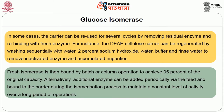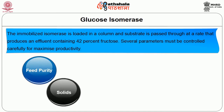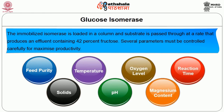Fresh isomerase is then bound by batch or column operation to achieve 95% of the original capacity. Alternatively, additional enzyme can be added periodically via the feed and bound to the carrier during the isomerization process to maintain a constant level of activity over a long period of operations. The immobilized isomerase is loaded in a column and substrate is passed through at a rate that produces an effluent containing 42% fructose. Several parameters must be controlled carefully for maximizing productivity. These parameters include feed purity, solids, temperature, pH, oxygen level, magnesium content and reaction time.